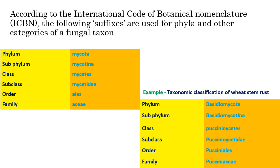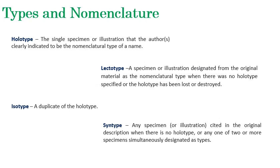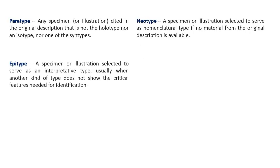Understanding taxonomic rules and regulations is very important for naming fungi. If a new fungus is identified, knowing the naming rules is essential — not only for fungi but also for bacteria, viruses, and other organisms. The types of nomenclature include holotype, lectotype, isotype, syntype, paratype, epitype, and neotype — these are the types used for naming of fungi.